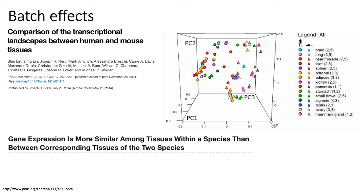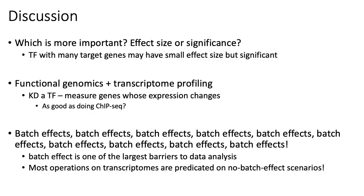The key point is that batch effects are huge sources of variation in many gene expression studies. You need to be very careful about batch effects when designing your experimental study. Just like with other genomic analyses, the question of which is more important — effect size or significance — also plays a role in bulk RNA sequencing.